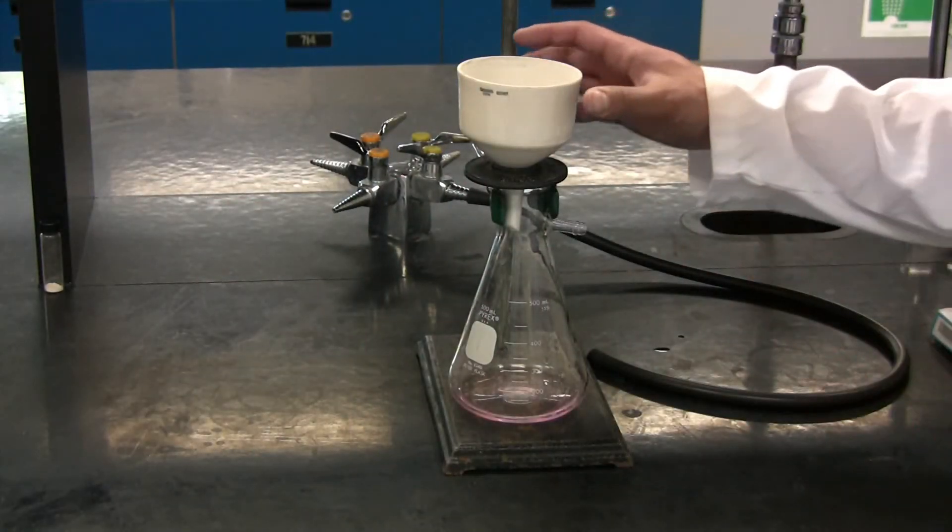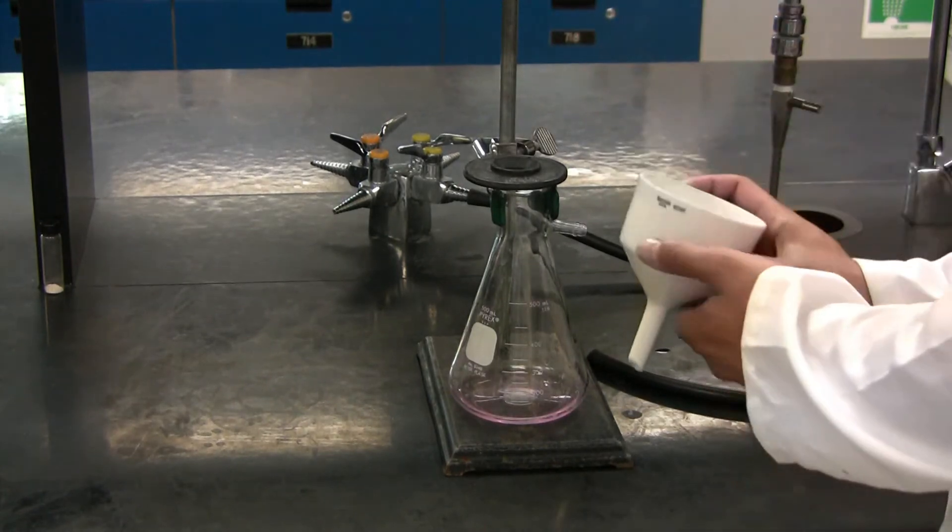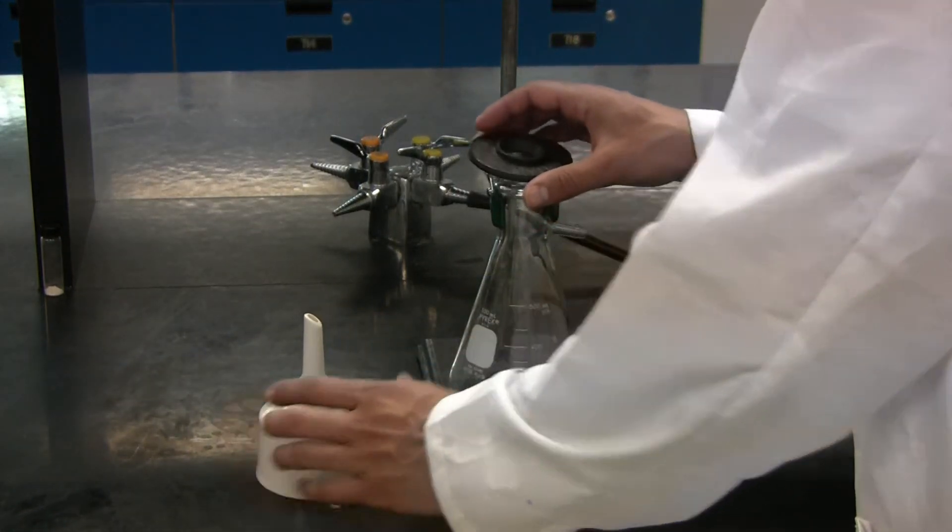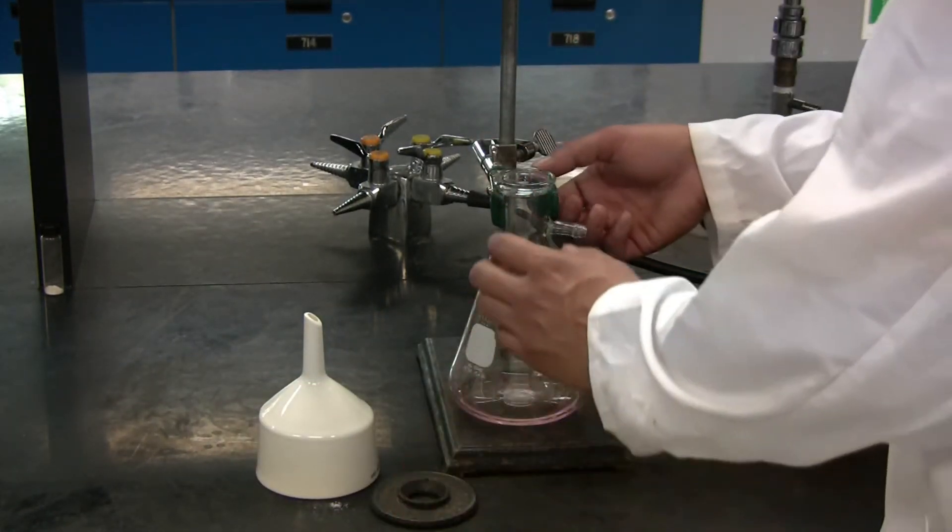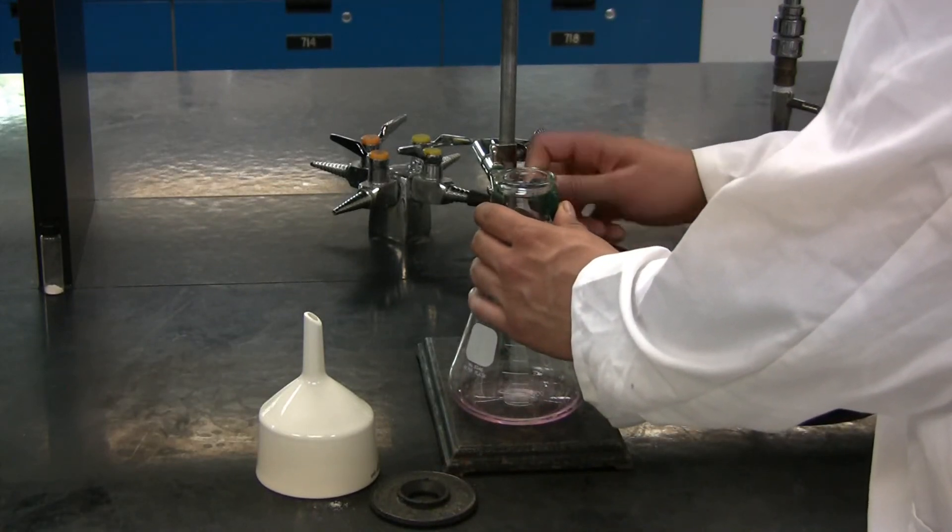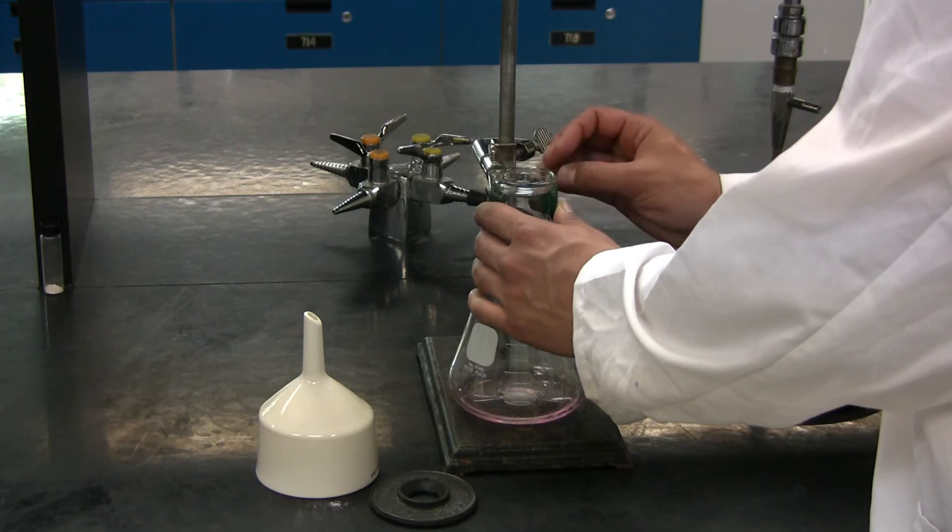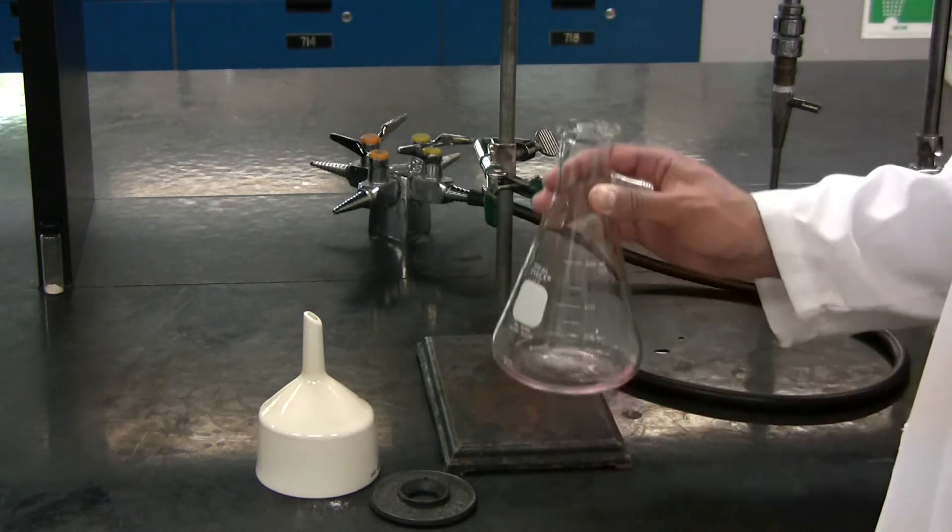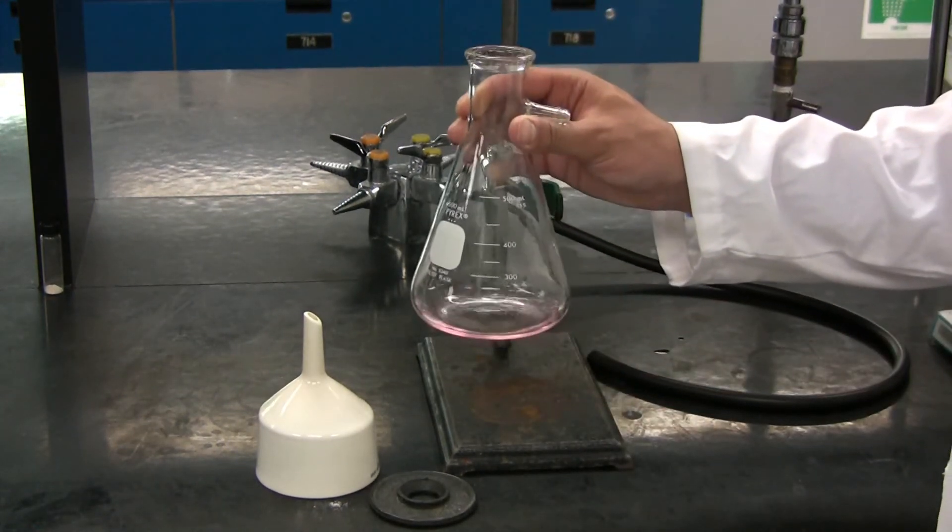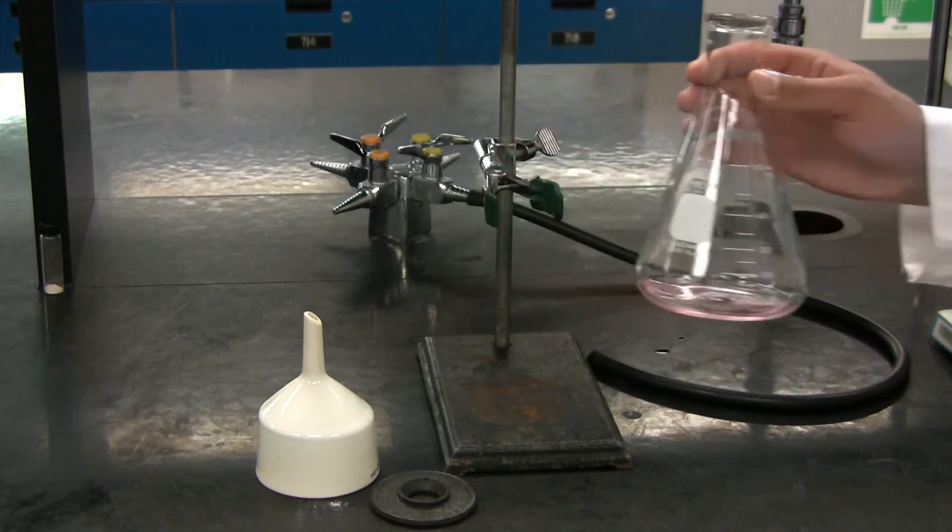You can disassemble the Buchner funnel and remove the rubber seal. Unscrew the clamp that holds the vacuum Erlenmeyer flask in place and remove this. You must appropriately discard this waste into the proper receptacle.